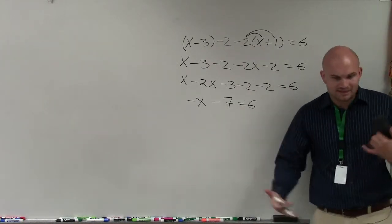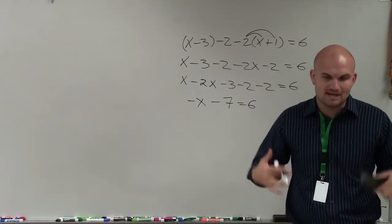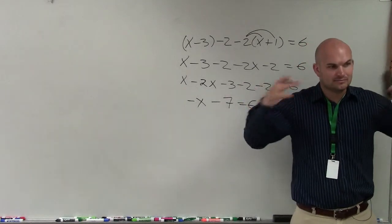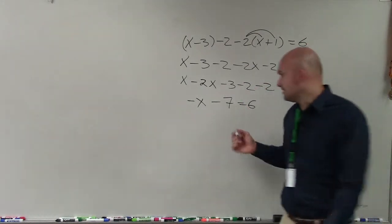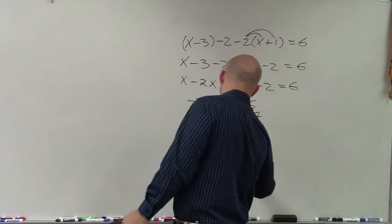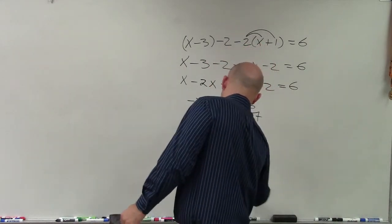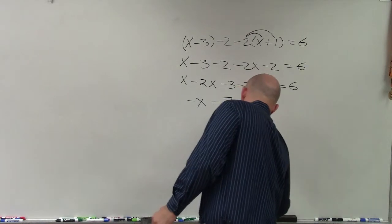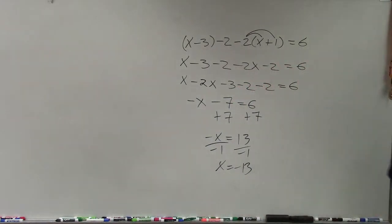So really, the only difficult thing with solving multi-step when you have variables on the same side is simplifying it down to a two-step. And then once it's a two-step, you just go ahead and solve. So x equals negative 13 in that example.